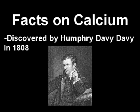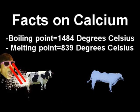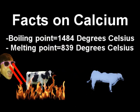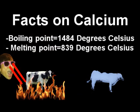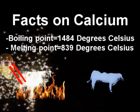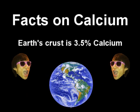Facts on calcium: Calcium was discovered by Humphrey Davy in 1808. Calcium's boiling point is 1,484 degrees Celsius, and its melting point is 839 degrees Celsius. Earth's crust is 3.5% calcium.